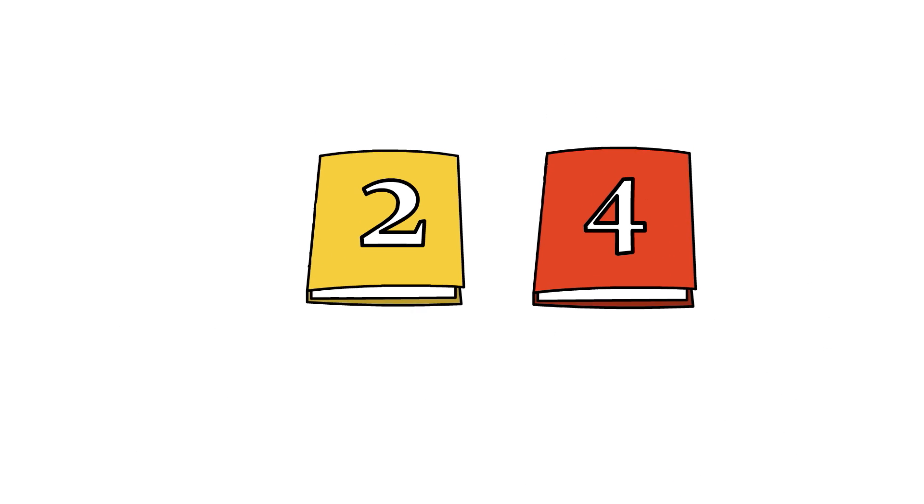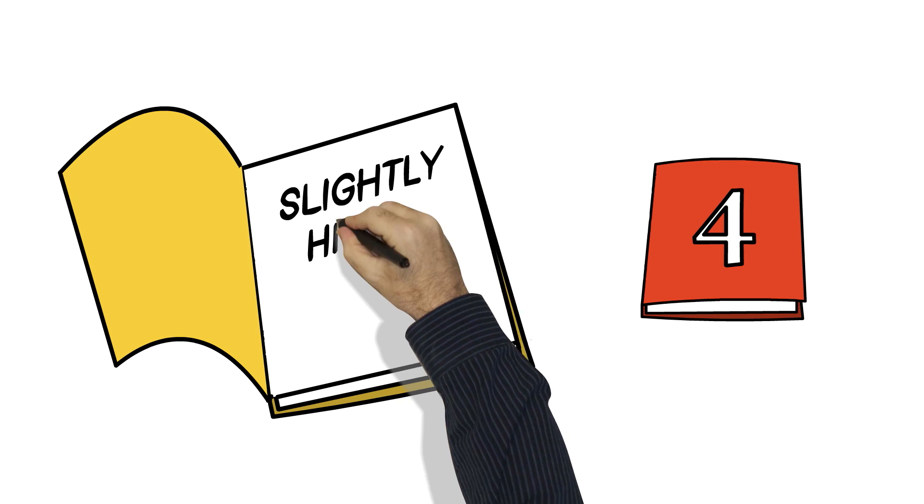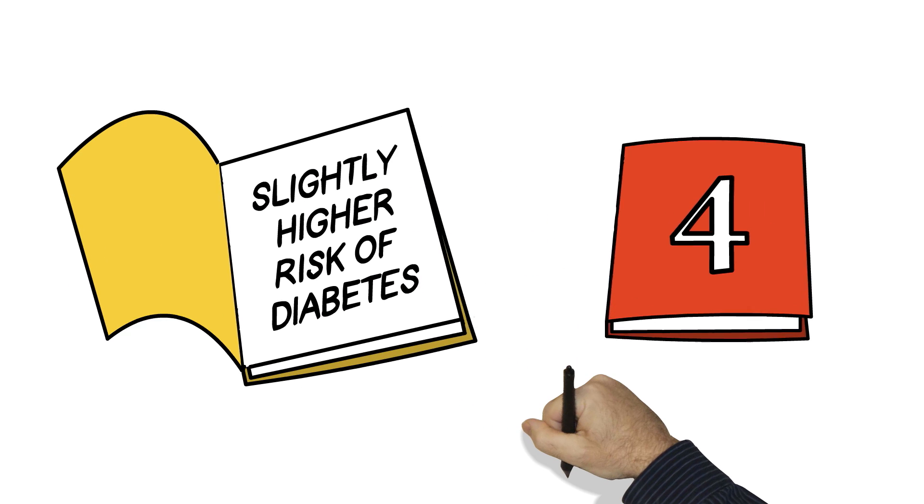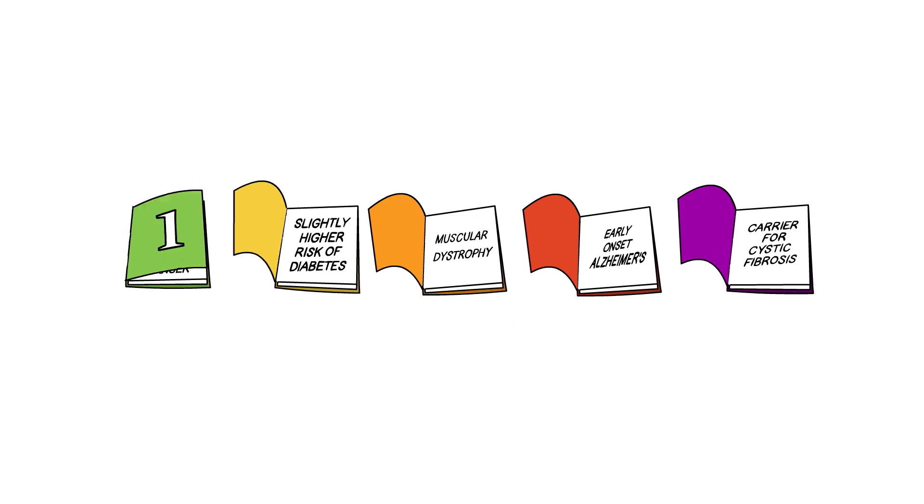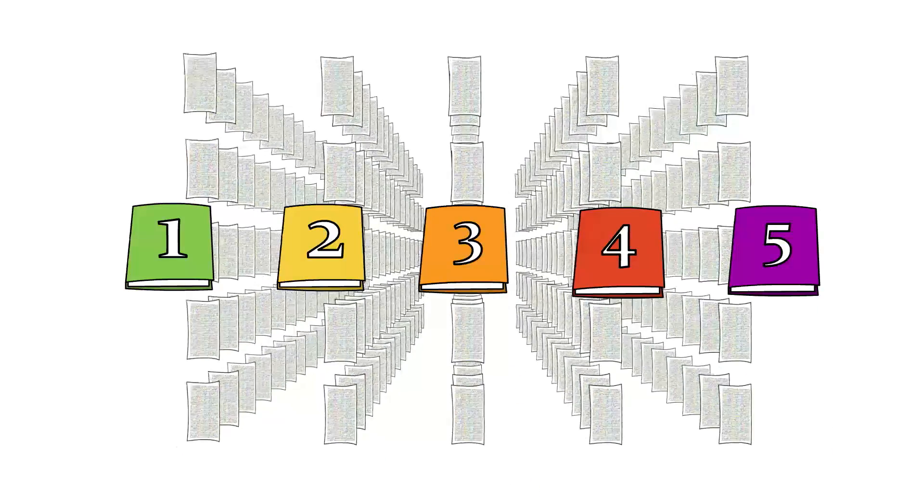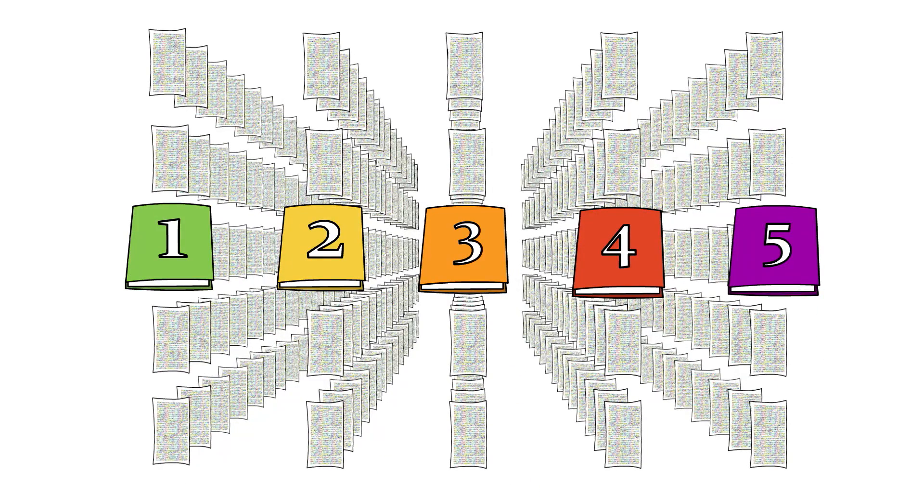Because you did not choose category 2 and 4, you will not learn about whether you are slightly higher risk for diabetes or whether you will get early onset Alzheimer's. These are just a few examples since there are many more disease risks included in each category than those I've offered here.